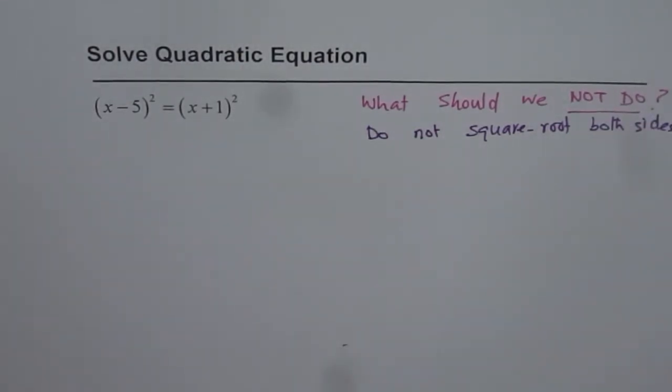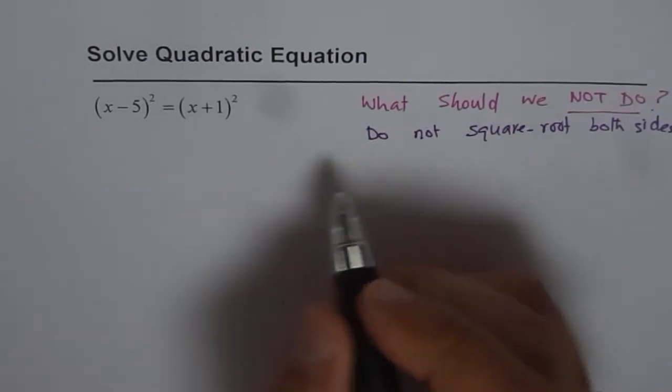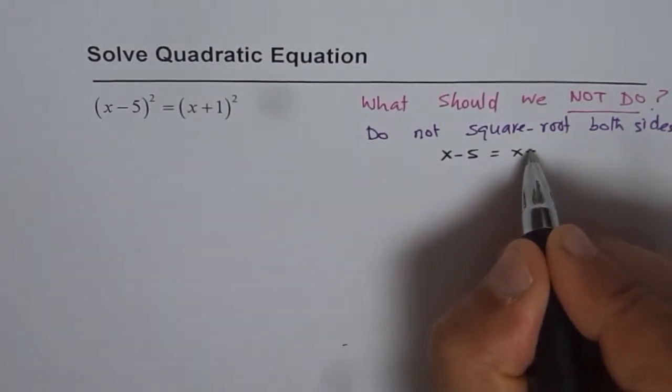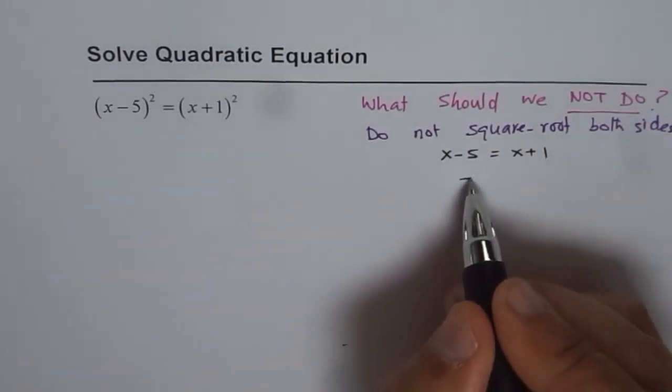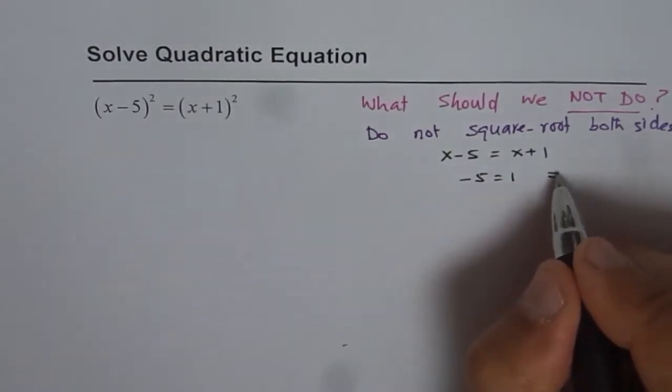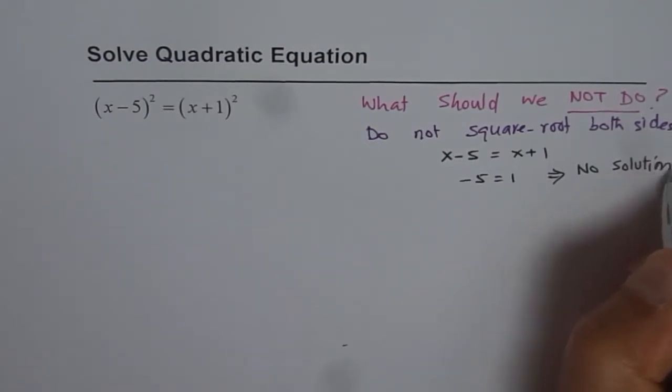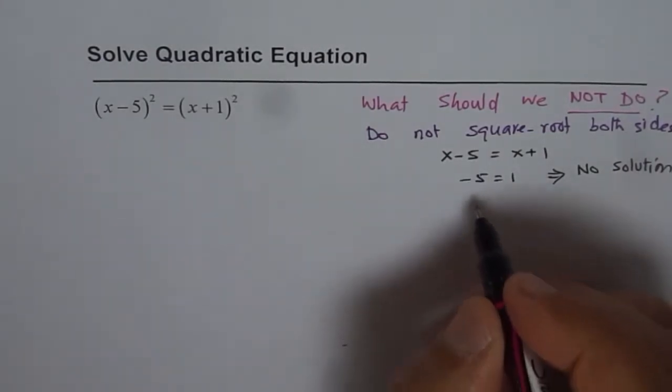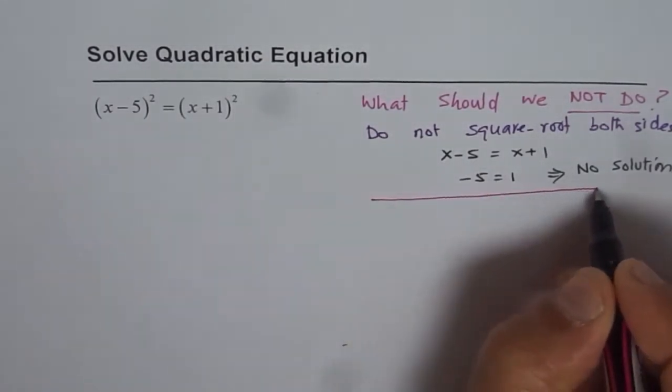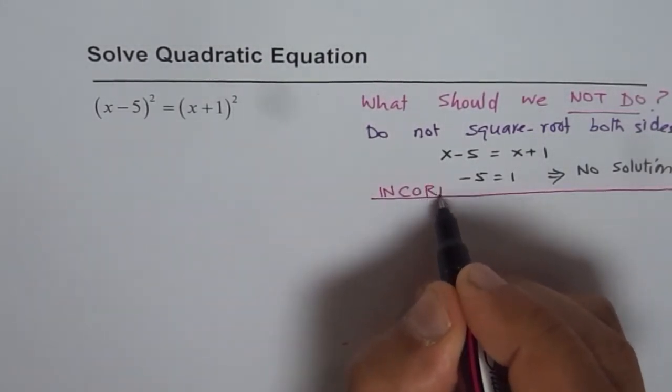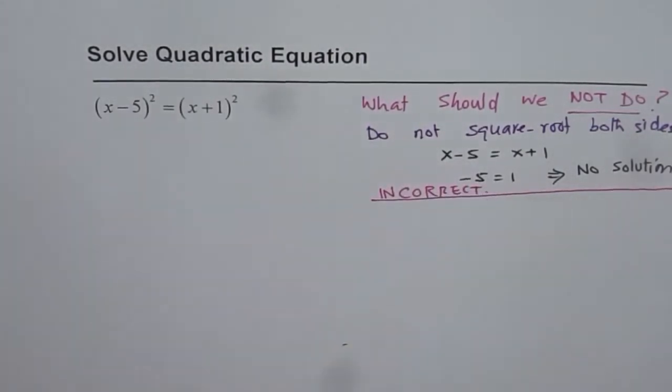If you do that, you get x minus 5 equals x plus 1, and then you say that means minus 5 equals 1, which means no solution. So that is the problem. This is absolutely incorrect. We should not do this part. This is what I want to highlight before we get into the real solution.